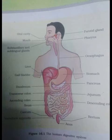Human Physiology, Chapter 1: Digestion and Absorption. The digestive system of humans consists of an alimentary canal and associated digestive glands.